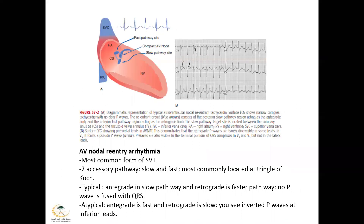There are two important SVTs we need to know. The first is AV nodal reentry arrhythmia, which is the most common form of SVT. In this arrhythmia, we have two accessory pathways — the slow and the fast. Most commonly, this kind of arrhythmia happens at the triangle of Koch. This is very important because if you as an electrophysiologist want to ablate in this area, you have to be careful not to injure the AV node and cause the patient to go into complete heart block.